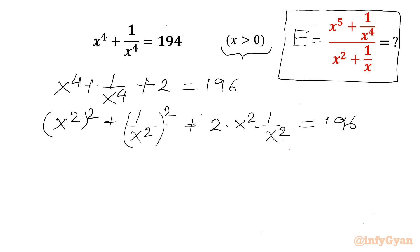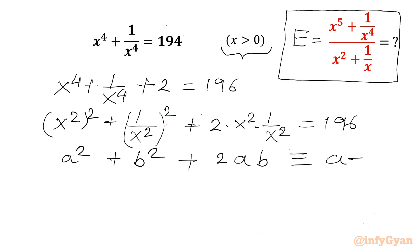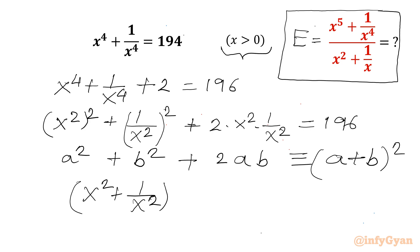You can see it is a square plus b square plus 2 times ab, which we write as a plus b whole square. So it is the square of x square plus 1 over x square, and 196 is 14 square.